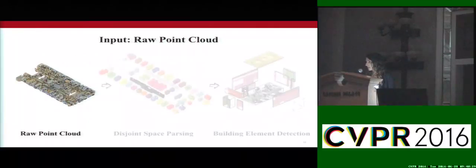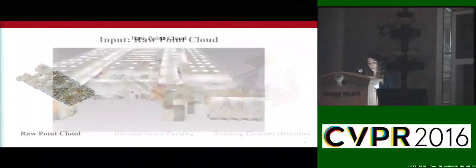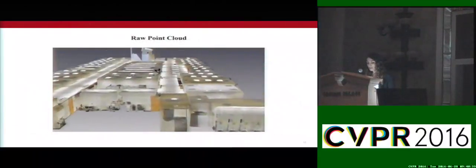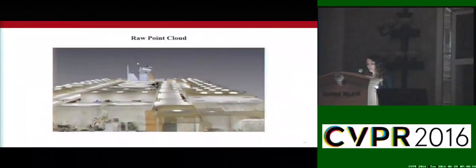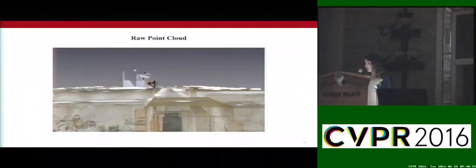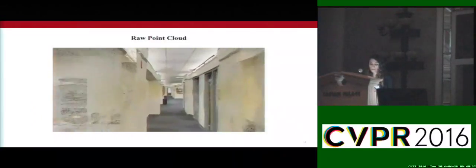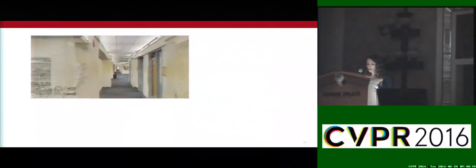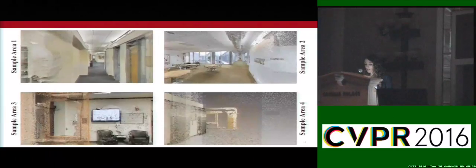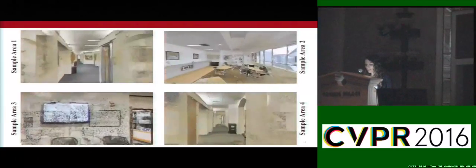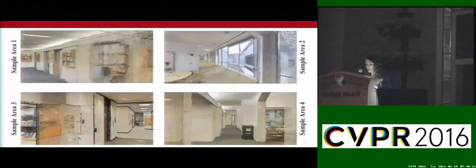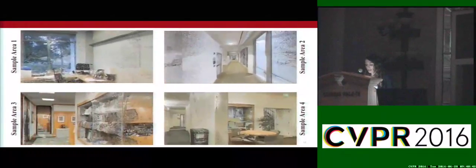Going into more details, we begin with a colored 3D point cloud, and here are some examples of the disjoint spaces included in our dataset. You can see how the building elements present variations among different areas.